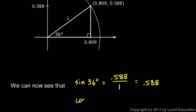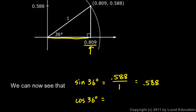We can also see that the cosine of 36 degrees will be this length — the adjacent side divided by the hypotenuse. And the adjacent side here has the value 0.809, as you can see right there. So the cosine of 36 degrees is 0.809 over the hypotenuse, which is 1, and 0.809 over 1 is just written 0.809.